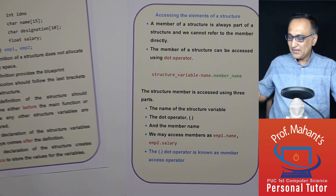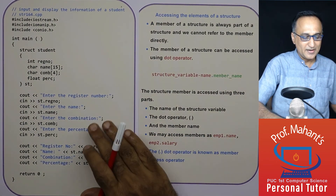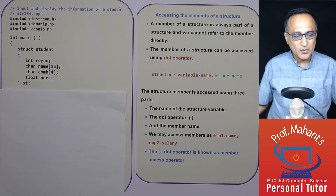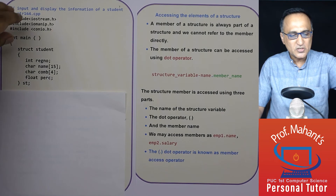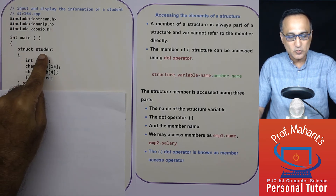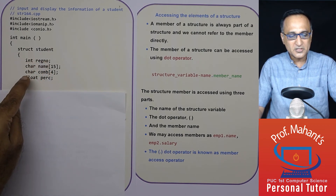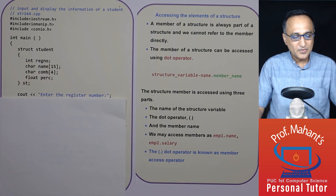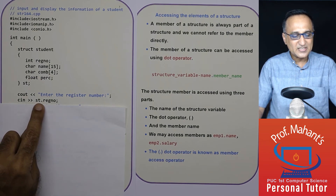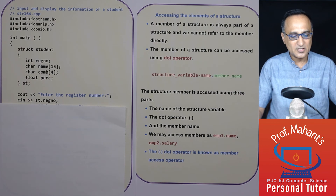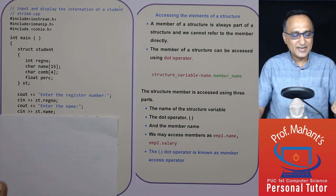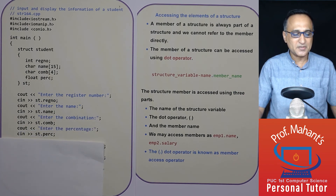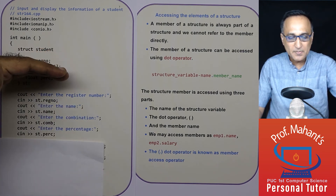Let us look at a small program to understand how we read or input and display information from a structure. I am using the normal header files. I have defined a structure student with particular fields or members, and I have created a structure variable called ST. When I ask the user to enter the register number, I use cin with ST.registernumber. For name, I refer to it as ST.name. The combination field is ST.combination, and the percentage is ST.percentage. This is how you access or refer to individual members of a structure.